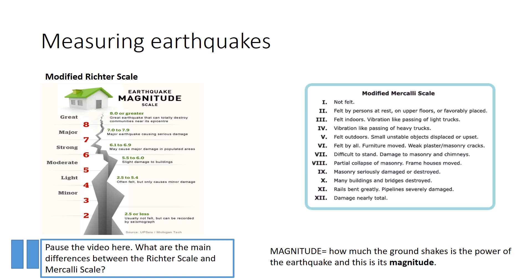Earthquakes can also be measured using the Mercalli scale. This scale goes from 1 to 12 using Roman numerals, and it measures the power and effects of earthquakes based on what is observed. For example, at number 1 most people wouldn't even feel the earthquake, whereas at number 5 most people would feel it and perhaps some windows would crack and break. At number 12, everything would be destroyed — buildings, bridges, railways — the ground would physically move in waves and people would die. Pause the video here and see if you can work out the main differences between the Richter scale and the Mercalli scale. Perhaps you could even draw a storyboard for Roman numerals 1 to 12 to show what the different effects would actually be.